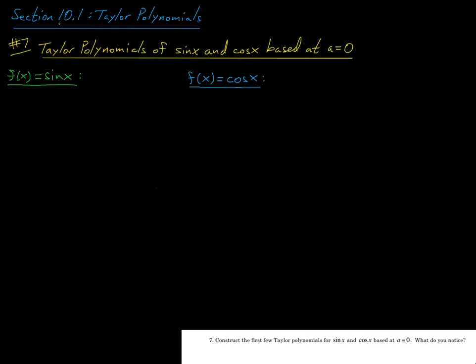Okay, so for our last video in section 10.1, we're going to look at question 7, which says, construct the first few Taylor polynomials for sine x and cosine x based at a equals 0. What do you notice? Alright, and so to compute the Taylor polynomials based at a equals 0, we're going to start by finding the values of these functions and their derivatives at 0.